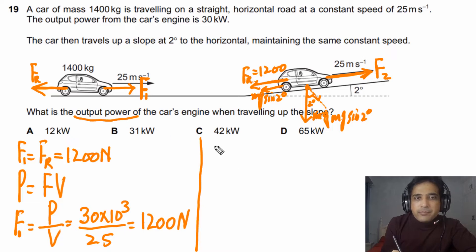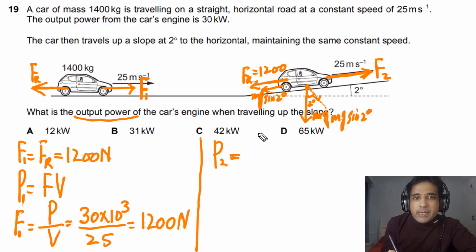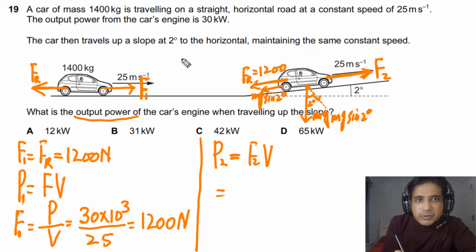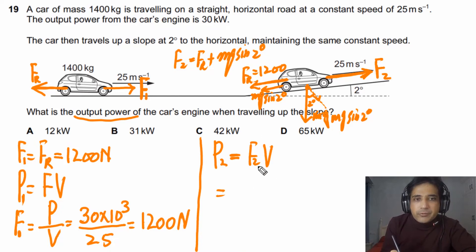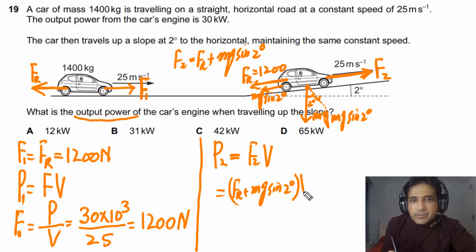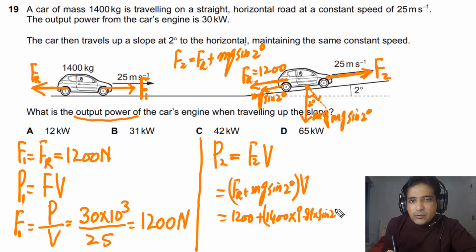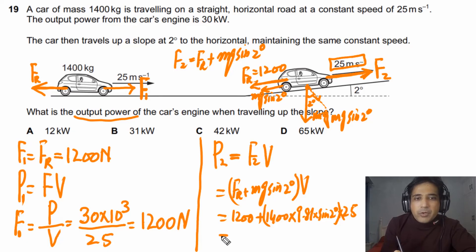The output power P2 equals F2 times v, where F2 equals Fr plus mg sine two degrees. Substituting: P2 = (1200 + 1400 × 9.81 × sine 2°) × 25. The speed remains the same at 25 m/s. Solving this gives a final answer of 42.2 kilowatts.